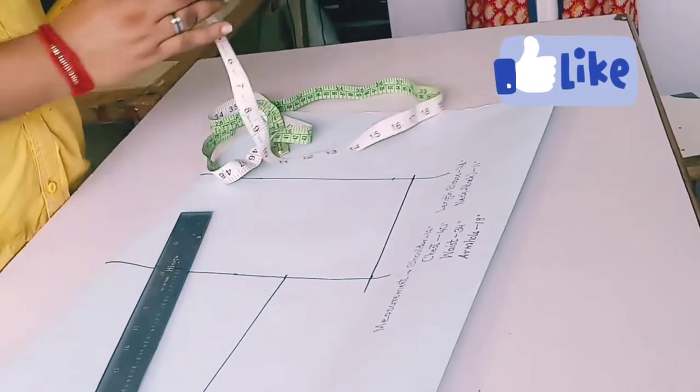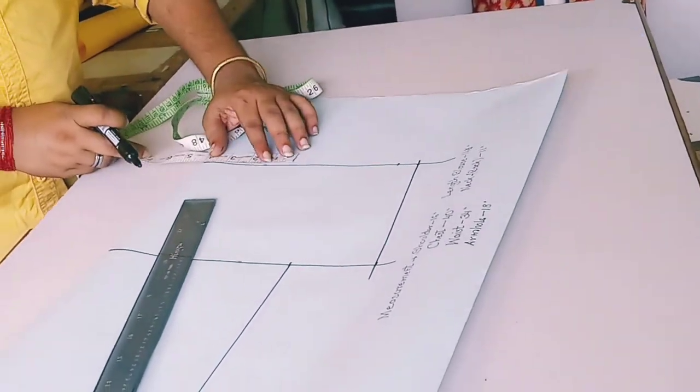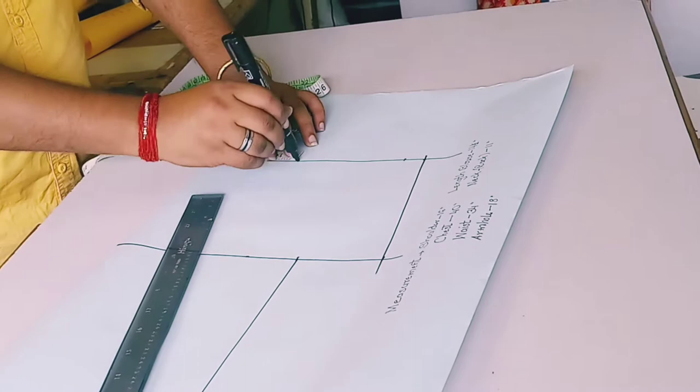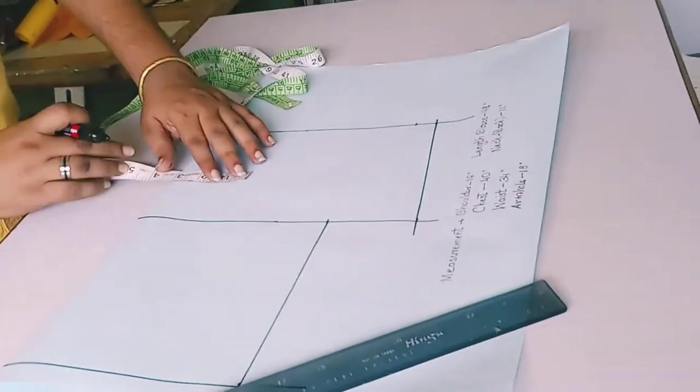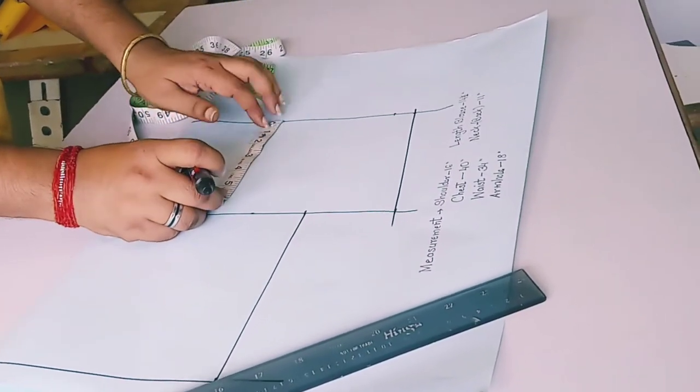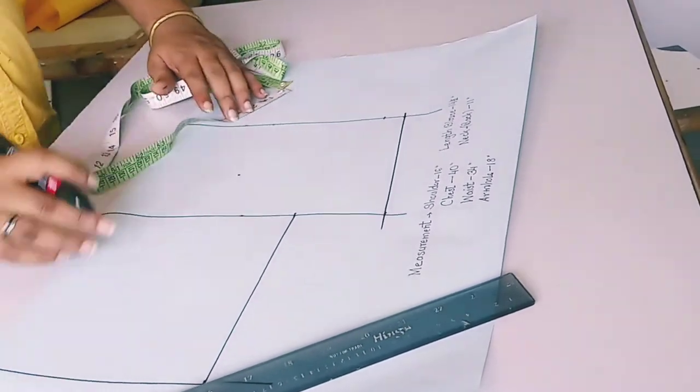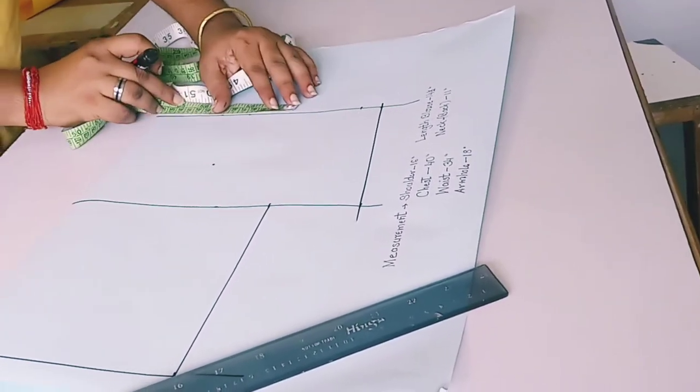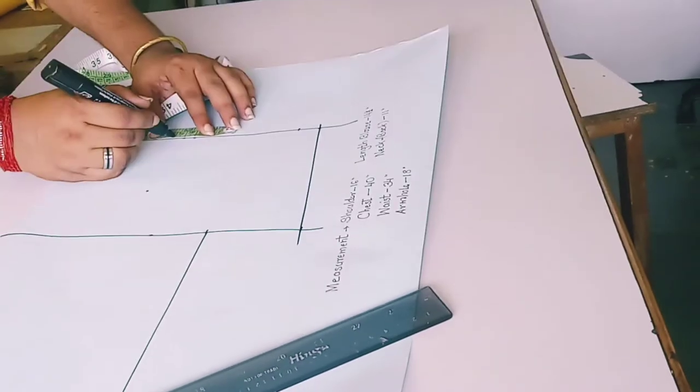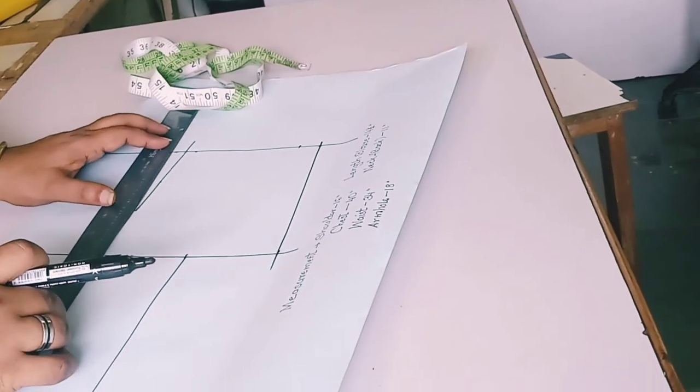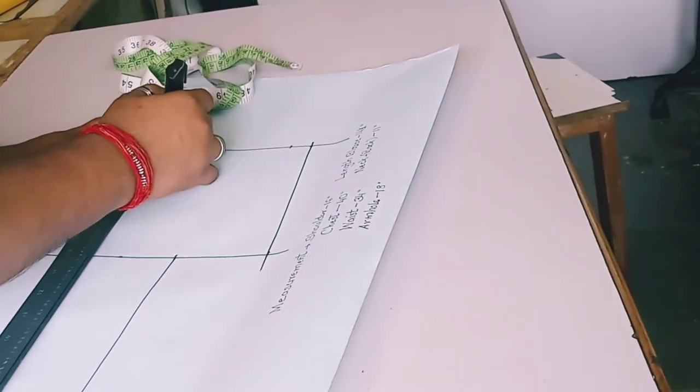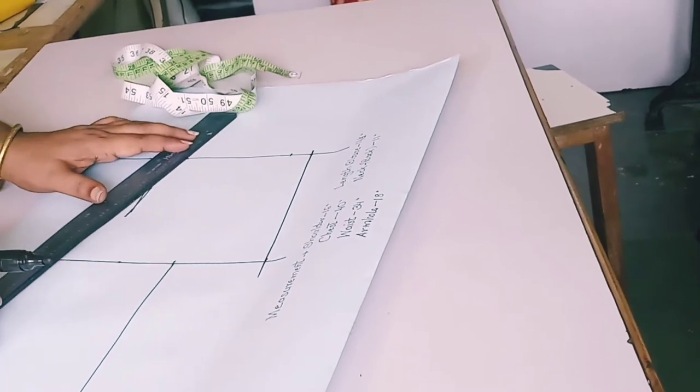This line you had drawn for side marking, and now we are marking here that point 4 by 4. Here you will take that 4 by 4. When you take this dart it will reduce.